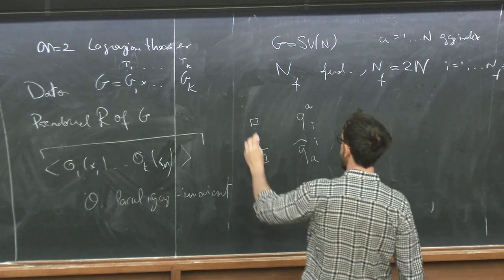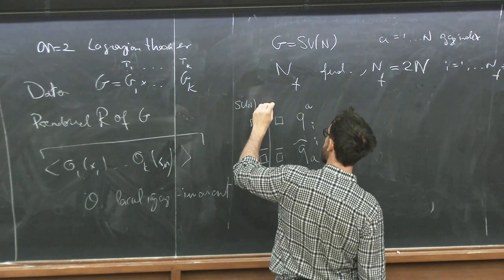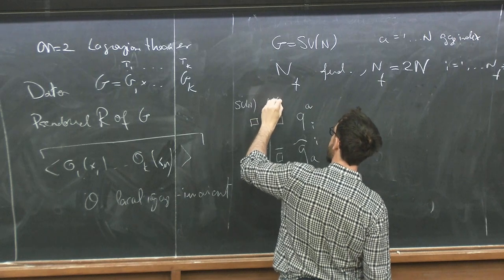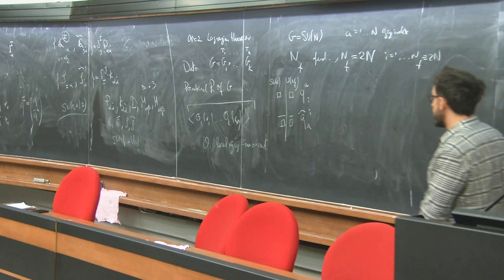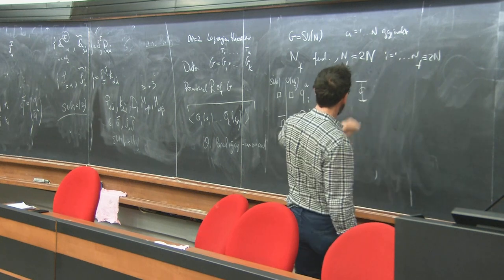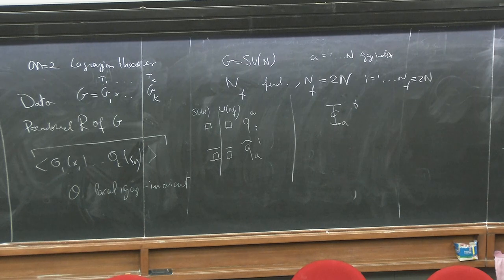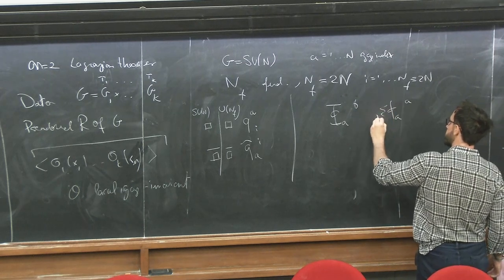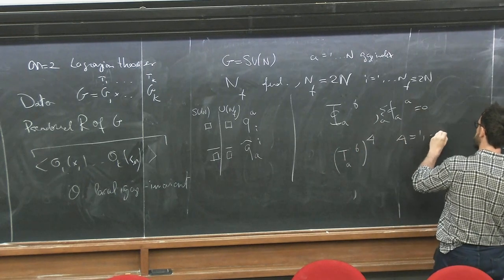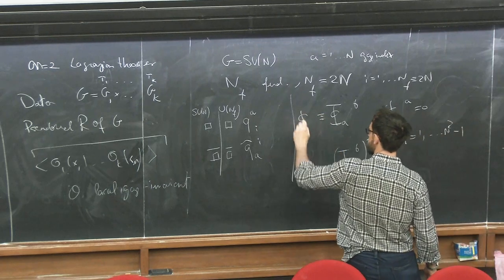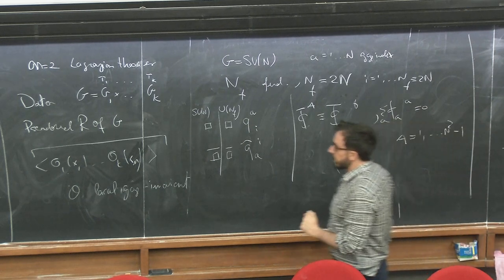To ensure vanishing of the one-loop beta function, we take N_F copies, adding an additional index I from 1 to N_F, which equals 2N for conformality. These objects are in the fundamental of SU(N) gauge group, and also charged under U(N_F) flavor symmetry. Our gauge fields transform in the adjoint — I can use fundamental-times-fundamental notation with implicit trace, or introduce an adjoint index A from 1 to N²-1. That's a simple example of an N=2 superconformal field theory.